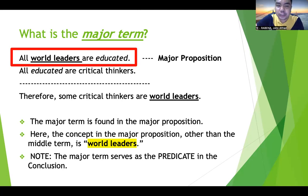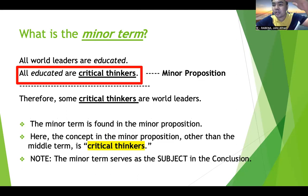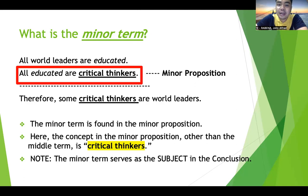The minor term is found in the minor proposition. Always remember that the first proposition is the major proposition and the second proposition is the minor proposition — the upper part is major, the lower part is minor. The concept in the minor proposition other than the middle term is critical thinkers, so critical thinkers is the minor term. In the conclusion, the minor term serves as the subject. In 'therefore some critical thinkers are world leaders,' critical thinkers is the subject because it is the minor term.